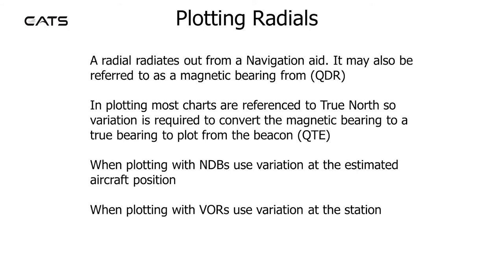Plotting radials. A radial radiates out from a navigation aid. It may also be referred to as a magnetic bearing from — QDR. In plotting, most charts are referenced to true north, so variation is required to convert the magnetic bearing to a true bearing to plot from the beacon. When plotting with NDBs, use variation at the estimated aircraft position. When plotting with VORs, use variation at the station.